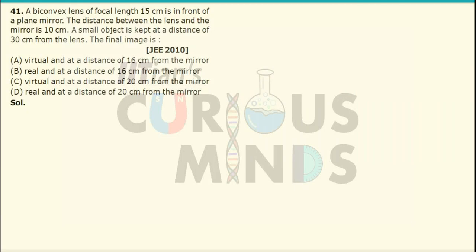A convex lens of focal length 15 cm is in front of a plane mirror. The distance between the lens and the mirror is 10 cm. A small object is kept at a distance of 30 cm from the lens. The final image will be formed at?